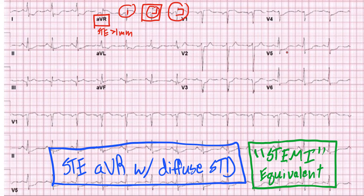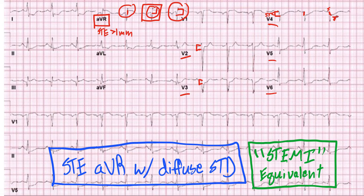Then if you look diffusely throughout the other leads, here we have our precordial leads: V2, V3, V4, V5, V6. And you get these ST depressions. So ST depressions there, there, there — this is a really blatant one. ST depression — we're specifically looking at that segment right there. Here's going to be your T wave, S wave, and you get this ST depression. You can see this throughout: ST depression here, ST depression here.